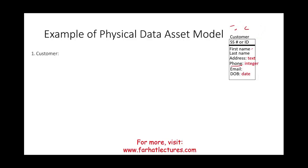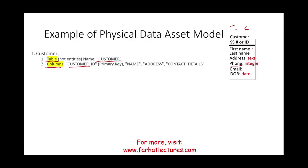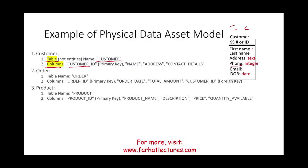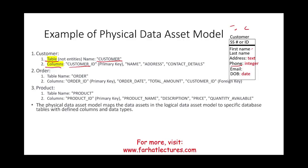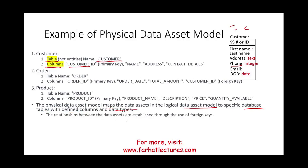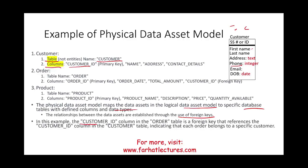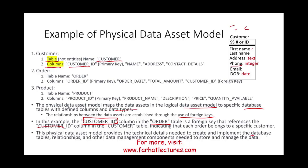This is an example of a physical data asset model. The customer will have tables — not entities — with the customer as the name of the table and columns, including a primary key. Order and product likewise have tables and columns. The physical data asset model maps the data assets in the logical model to specific database tables with defined columns and data types — for example, addresses are text, phone numbers are numbers. Relationships between the data assets are established through foreign keys. In this example, the customer ID column in the order table is the foreign key that references the customer ID column in the customer table. The physical data asset model provides the technical details needed to create and implement the database tables, relationships, and other data management components needed to store and manage the data.